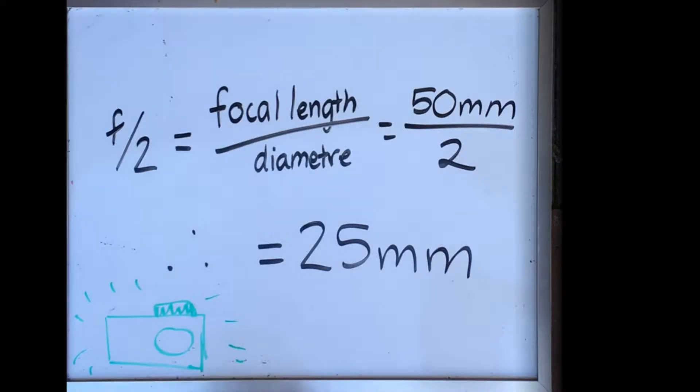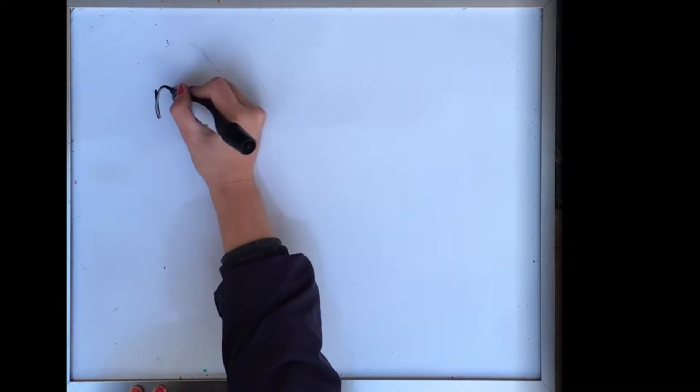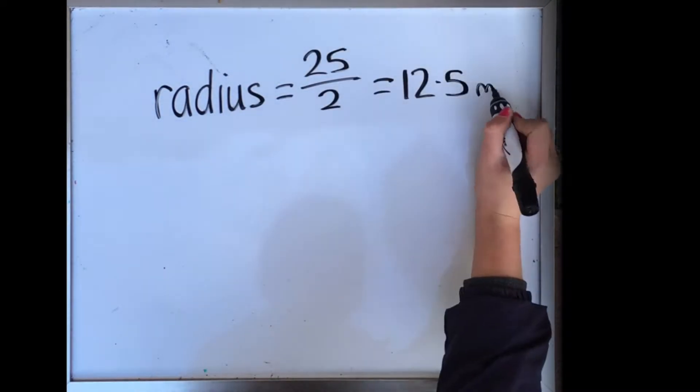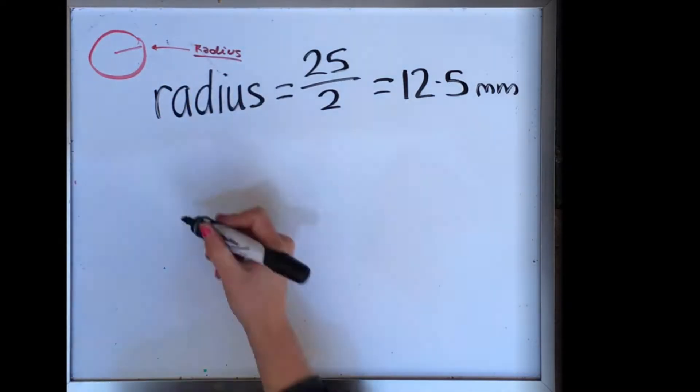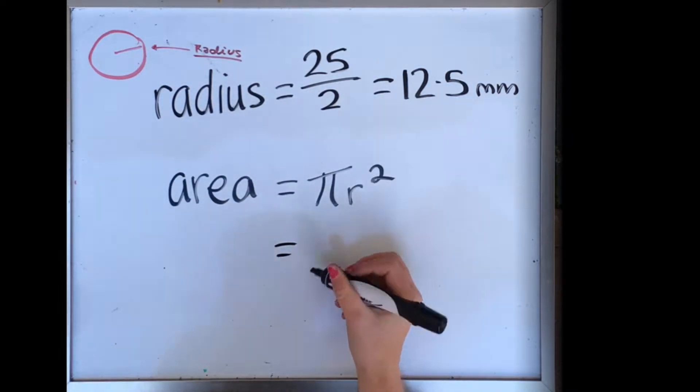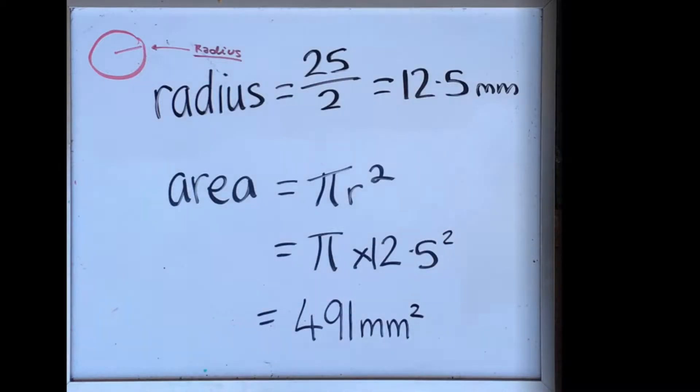Obviously the radius of the aperture is half the diameter and to find the area of the aperture at each f-stop we use the formula pi r squared. So for the f-stop f2, the area of the iris is 491 millimetres squared rounded, which lets in a fair amount of light.